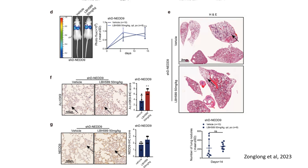Panel F focuses on histone acetylation (acetylated H3K9), a marker of active chromatin and gene transcription. Staining intensity is significantly higher in NET9 knockdown mice treated with LBH589, as indicated by the arrows and quantified in the bar graph. This suggests that despite the reduced metastasis, LBH589 maintains its role in histone acetylation, potentially altering gene expression profiles.